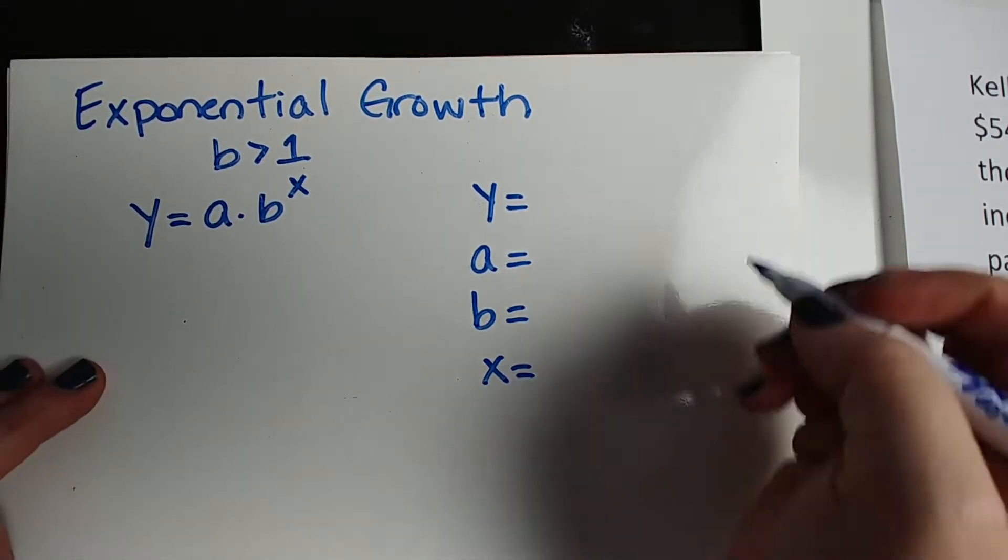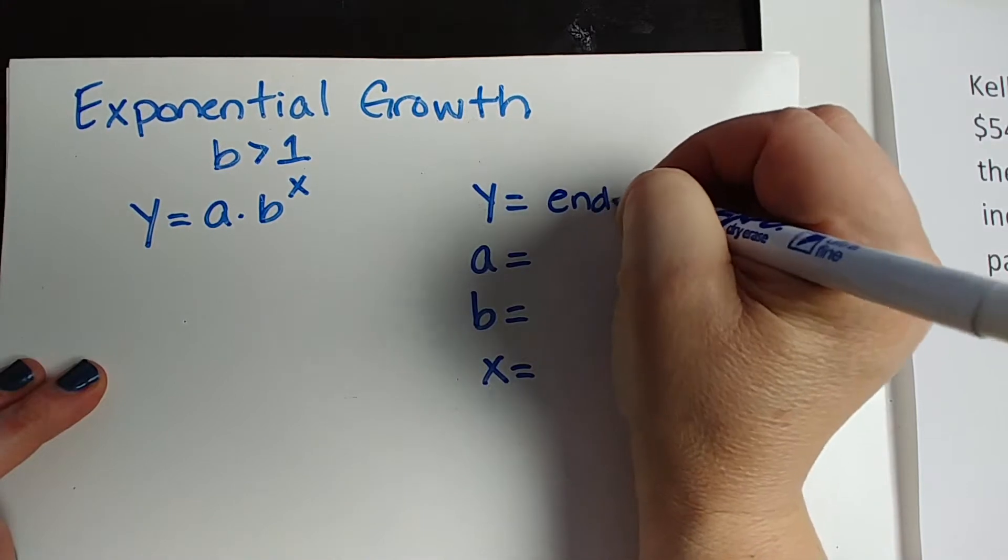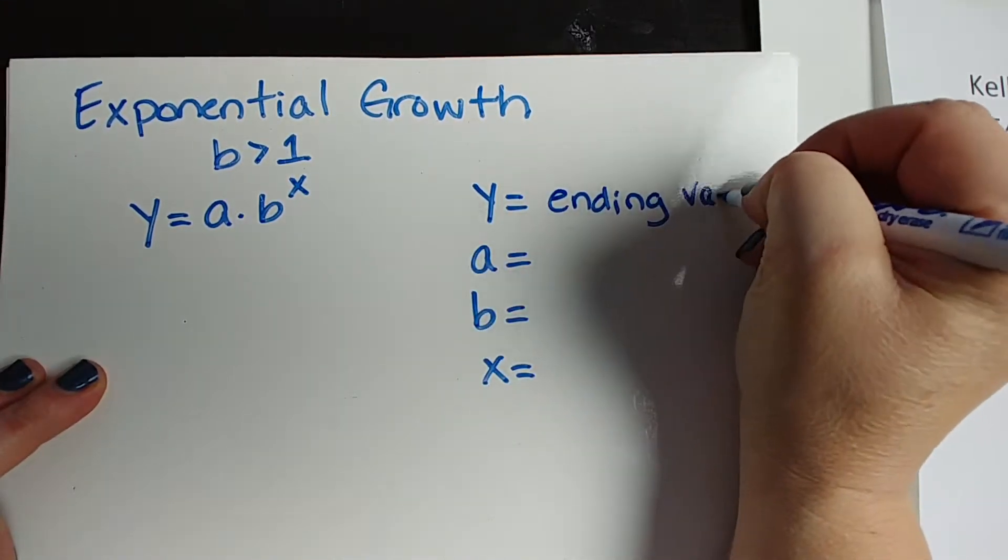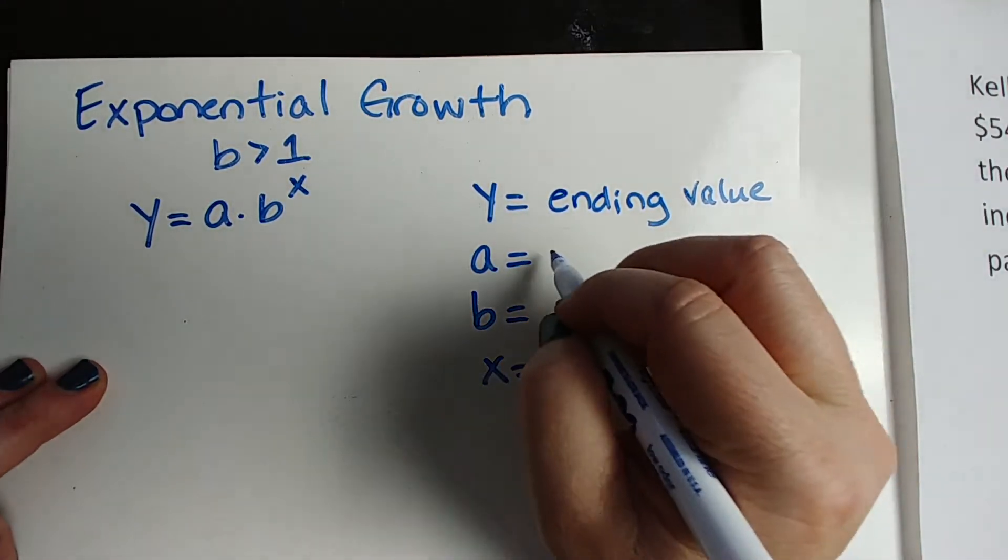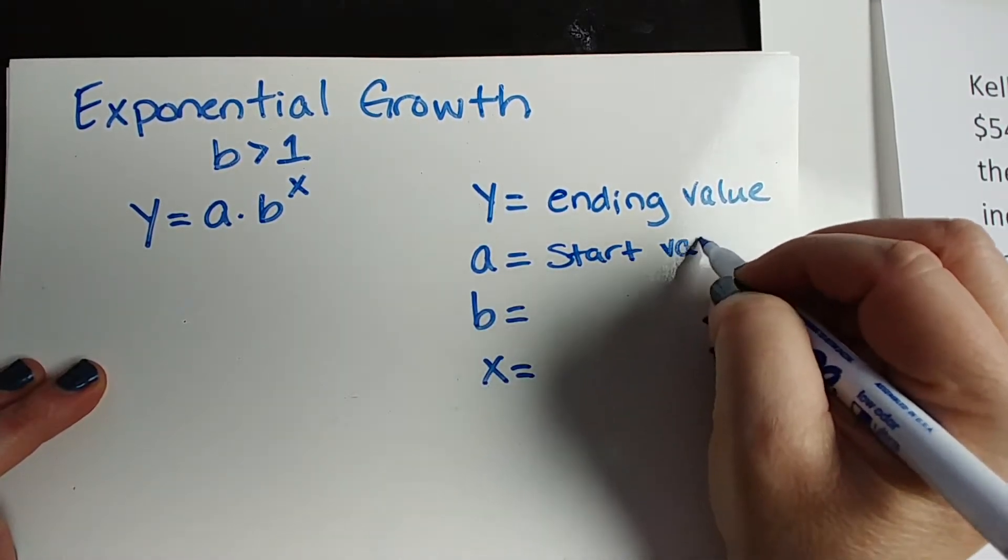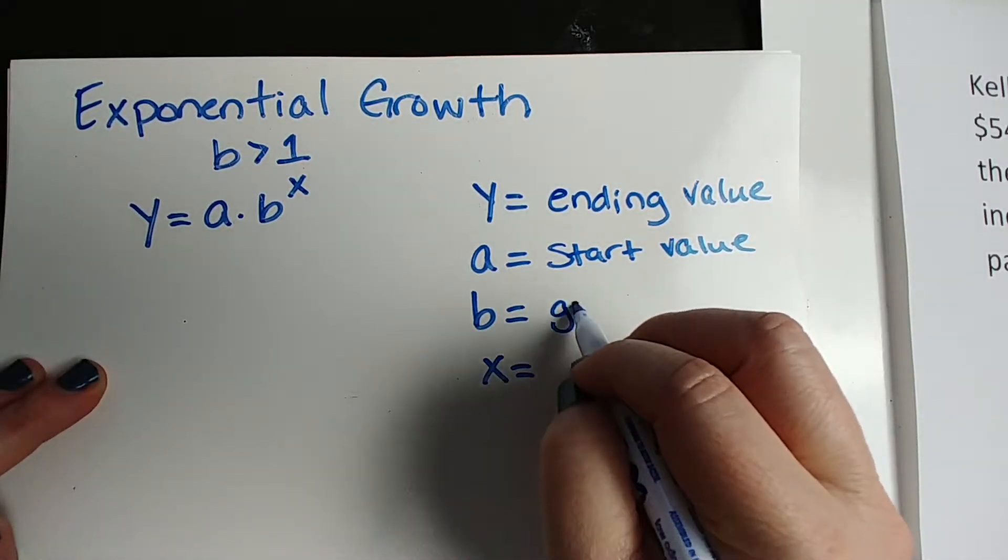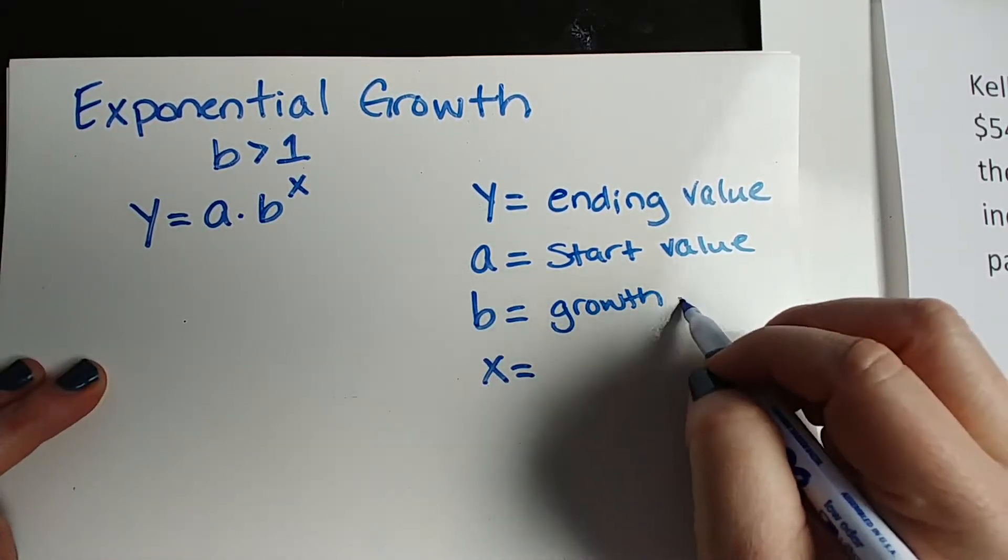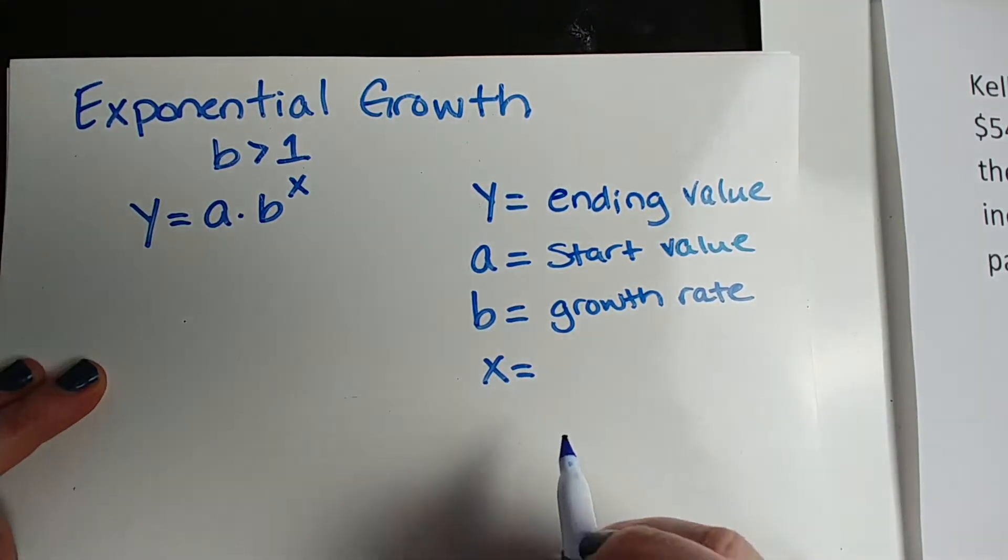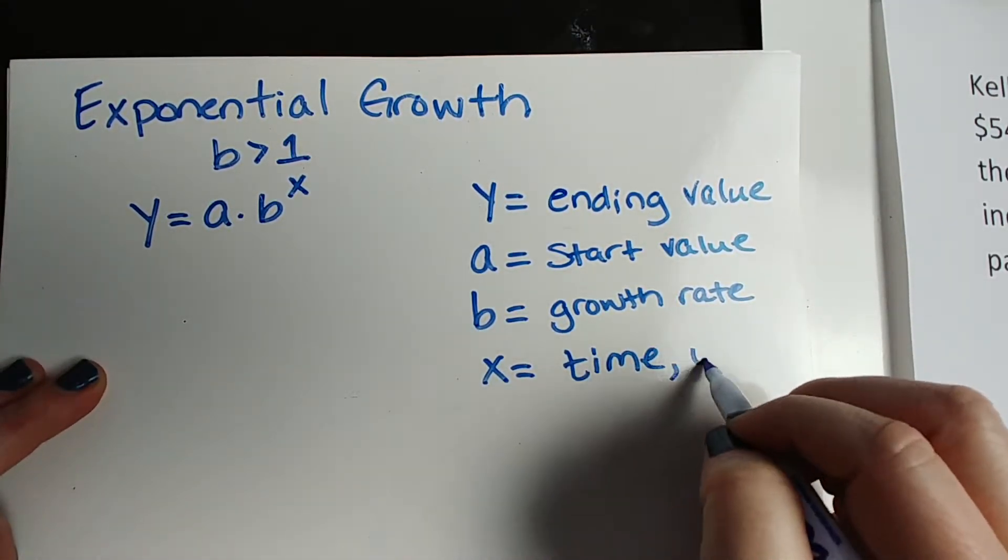Y is going to be our ending value. A is going to be the starting value, your initial value, however your textbook words that. B is going to be the growth rate, sometimes they call it the growth factor. And X is time in years.